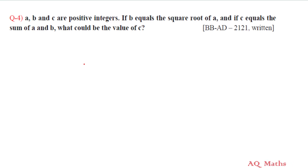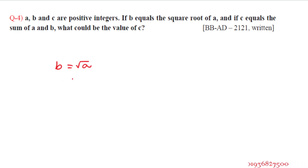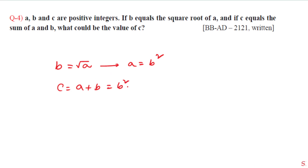A, B, and C are positive integers. If B equals the square root of A, and if C equals the sum of A and B, what could be the value of C? So B equals root of A, meaning A equals B squared. Therefore C equals A plus B equals B squared plus B, which equals B times (B plus 1).